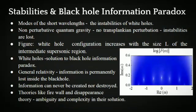Information cannot be created nor destroyed in our universe. The calculations done using the general theory of relativity suggest that information is permanently lost inside the black hole, which raises controversy with modern physics. The quantum theory firmly states that information can be scrambled but cannot be lost in any way. Many other theories like the disappearance theory and the firewall theory try to explain a solution to the paradox, but these contain a lot of complexity and ambiguity, unlike the white holes.